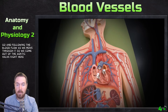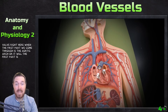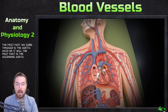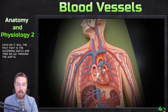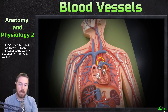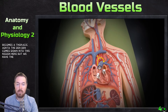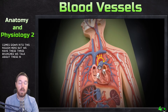The first part is the ascending aorta, and then we go through the aortic arch, then down through the descending aorta, which becomes the thoracic aorta, coming down into this region here. Then we have three branches — we talked about these in the heart video.